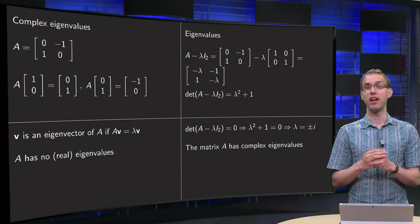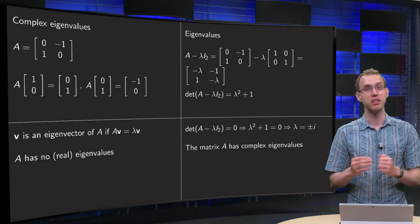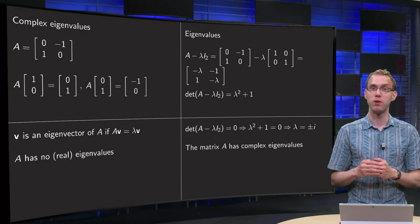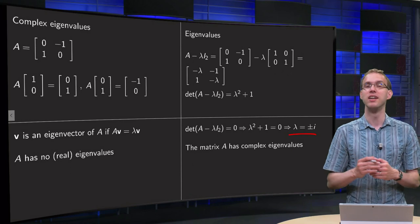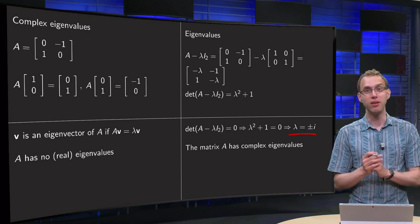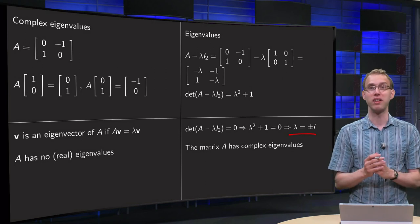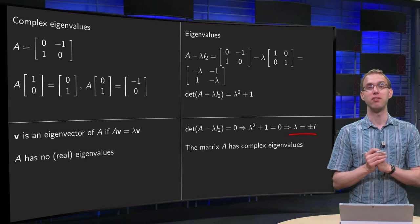Unless we allow complex numbers. If you allow complex numbers, then you can solve this equation. λ² + 1 = 0 yields λ = ±i. So matrix A does not have any real eigenvalues, but we can still find eigenvalues—we will find complex eigenvalues.